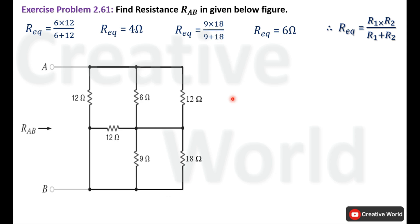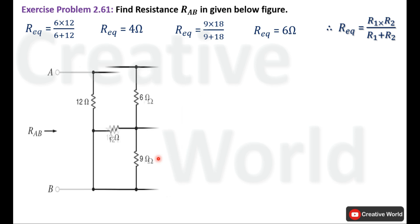We replace the first parallel pair with a single 4 ohm resistance and the second parallel pair with 6 ohm. We then modify the circuit by replacing these resistances with their equivalents.